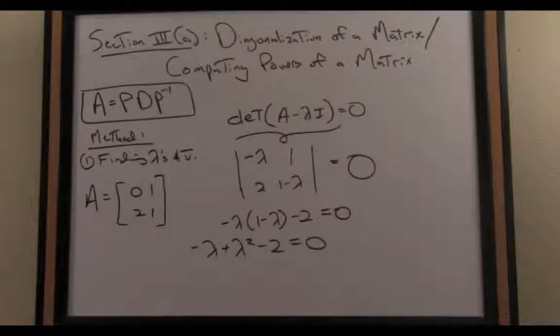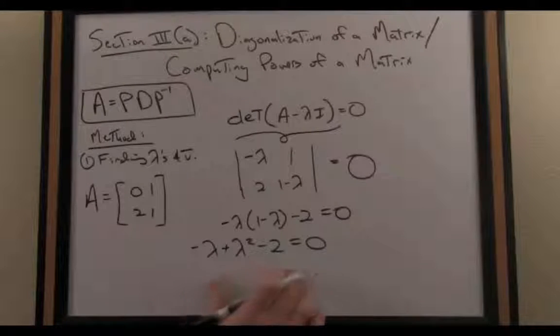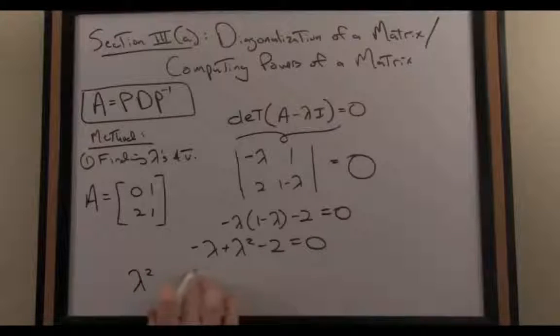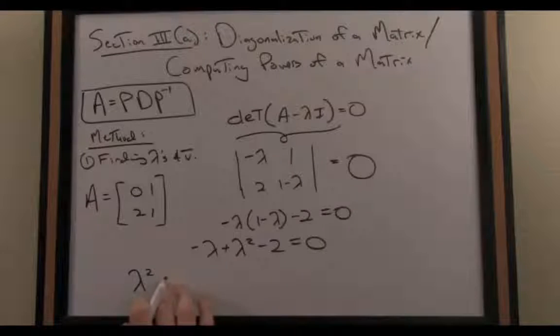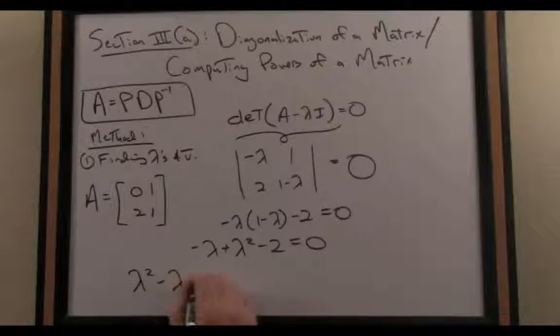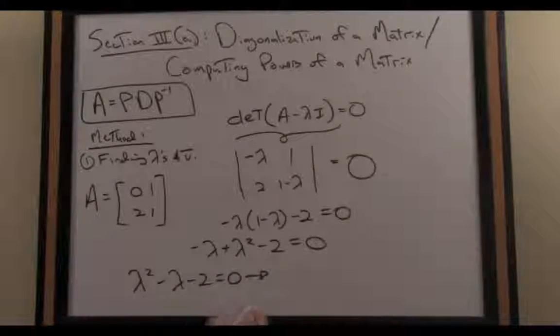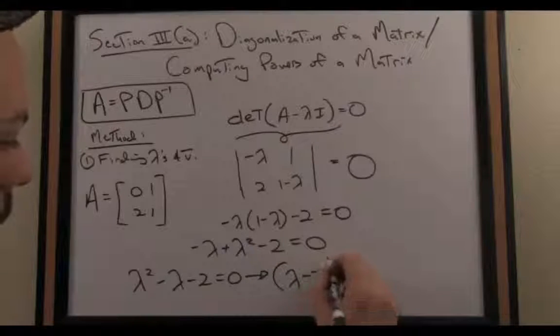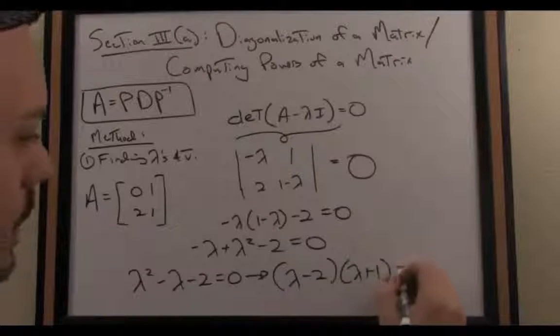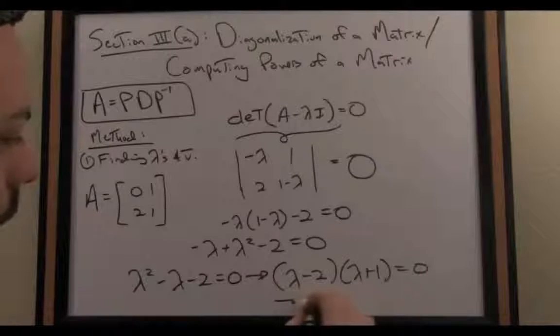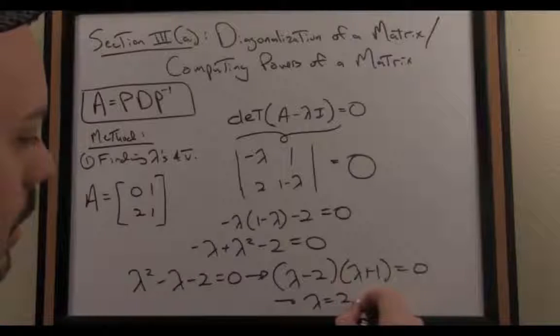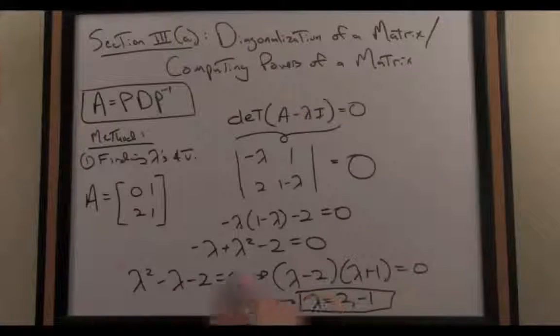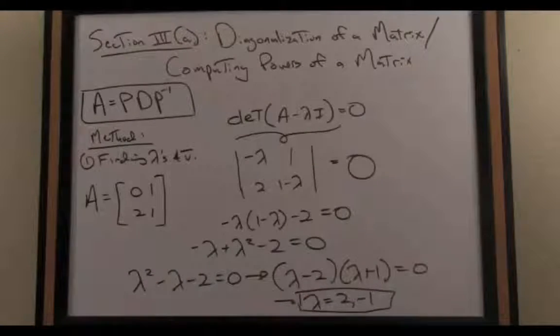You could solve this using the quadratic formula. Here fortunately this factors. I'll rearrange things in descending order with the power. λ² - λ - 2 = 0. That fortunately factors for us. We can write this as (λ-2)(λ+1) = 0. This implies either λ = 2 or λ = -1. Sure enough, those are the eigenvalues associated with that particular matrix A.